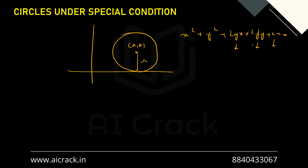We have three variables and we need three conditions to find them out. Here one condition is given in a hidden format. If you look closely, the length of the radius is the same as the k coordinate, because this length equals the k coordinate and is also r. So you can write k in place of r — you don't need to put r and k separately. Now we have just two variables h and k.